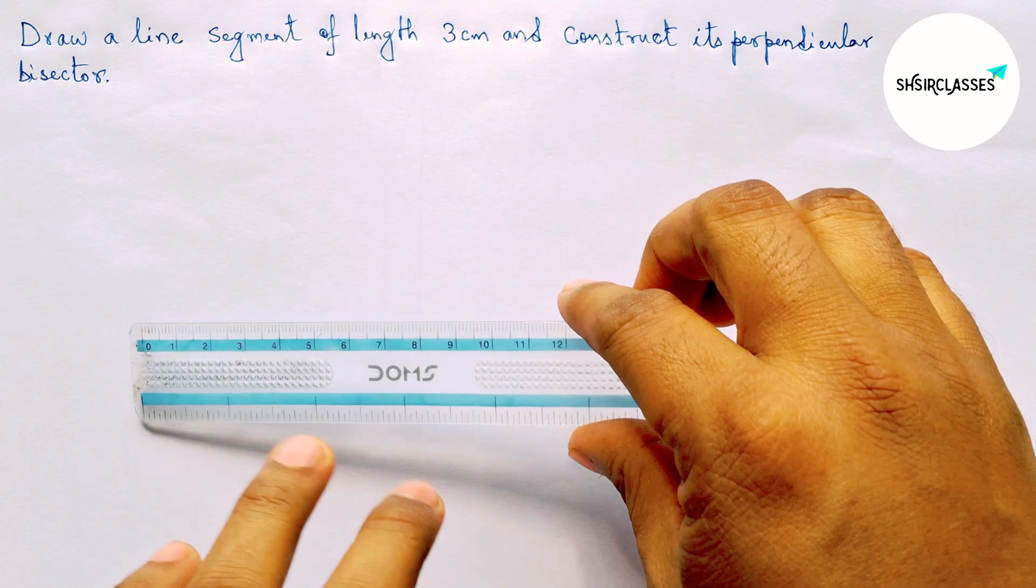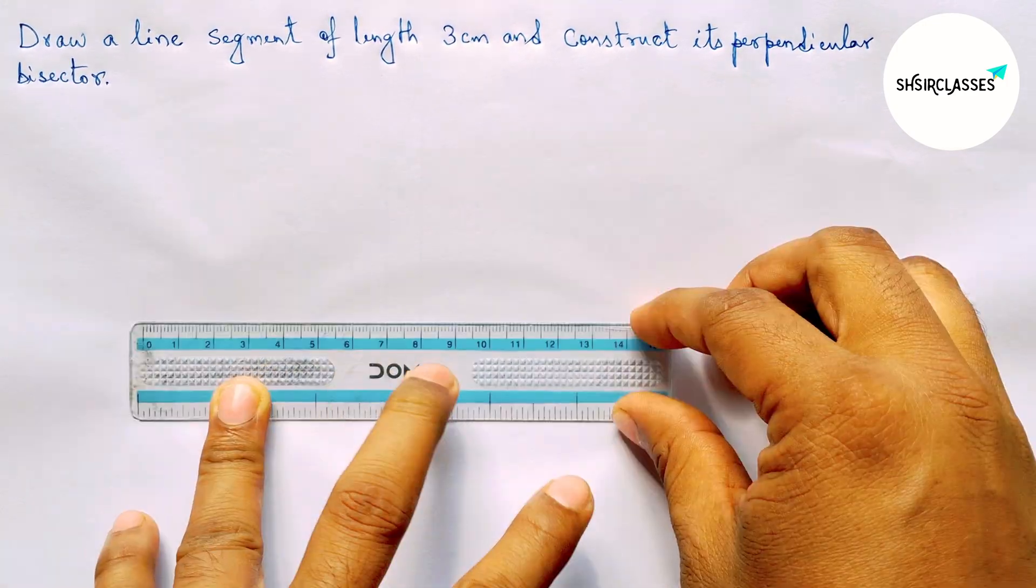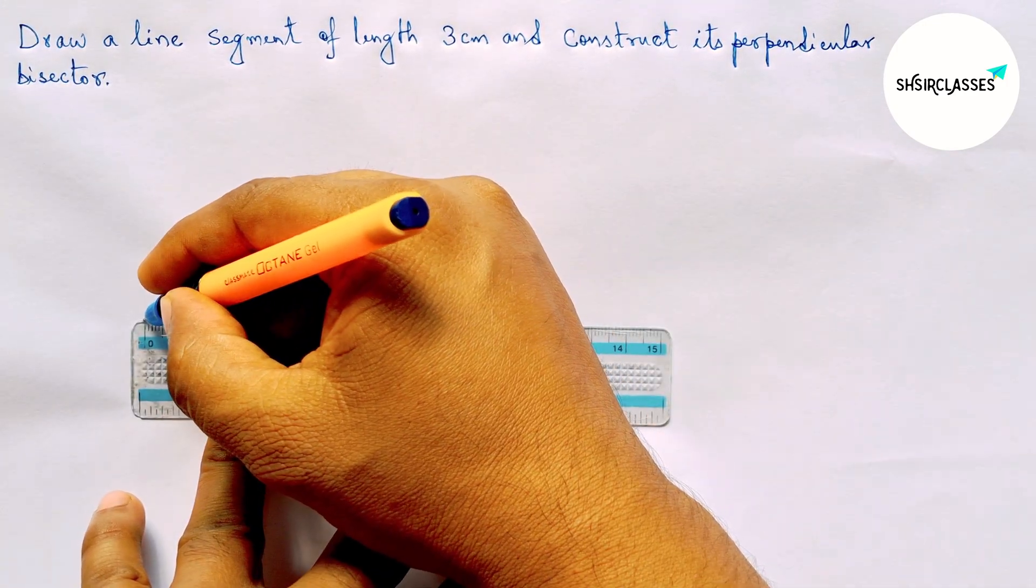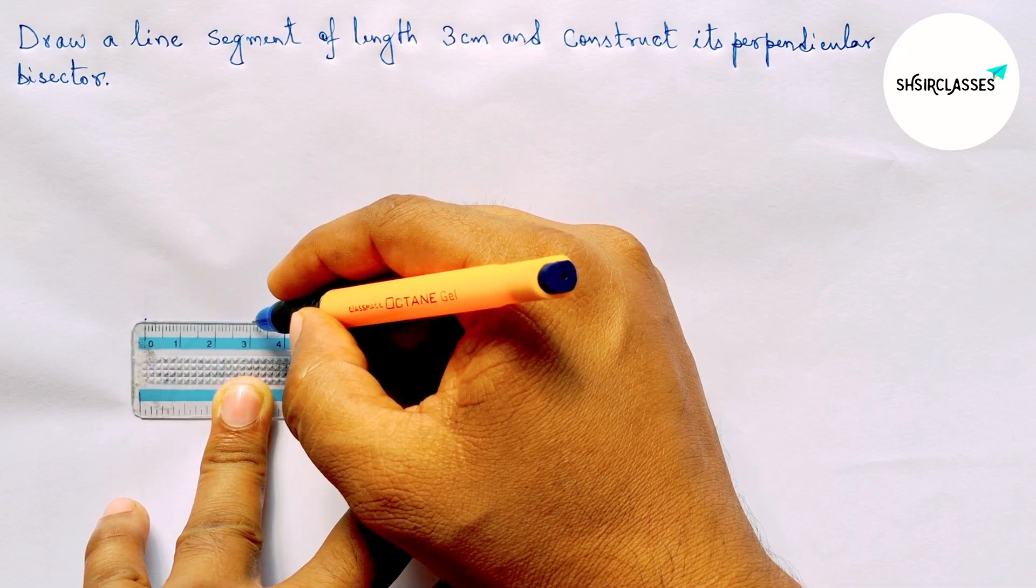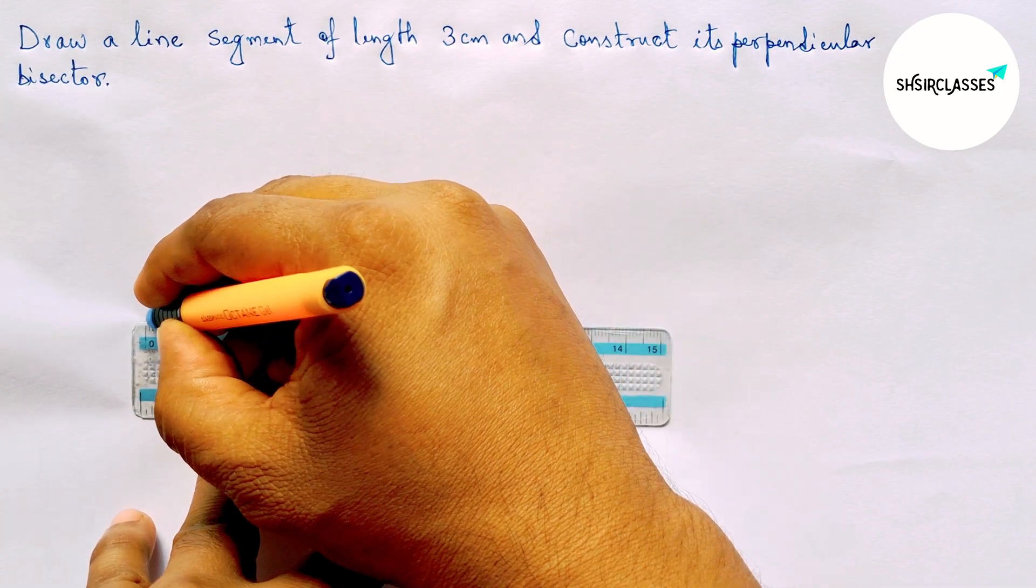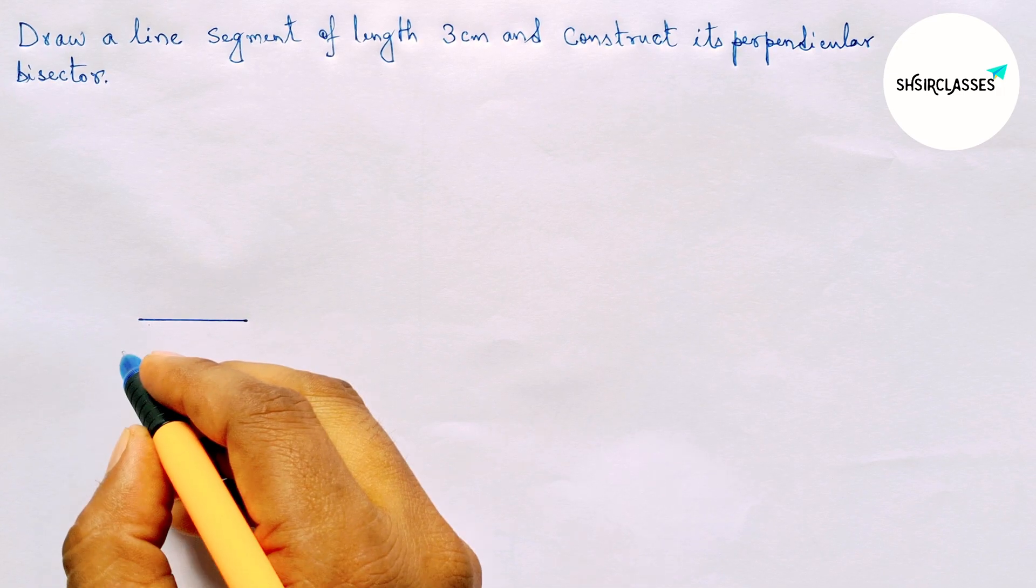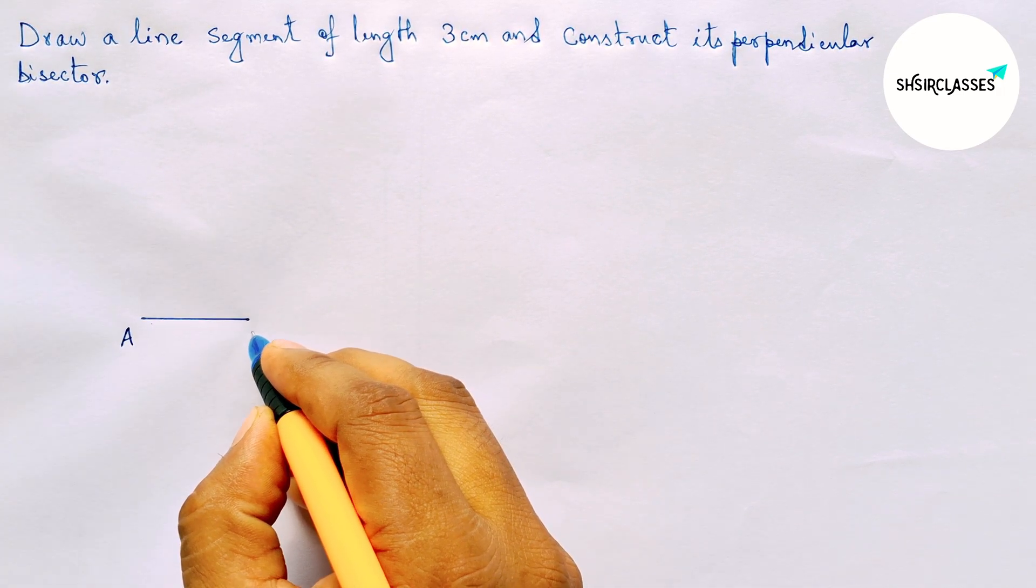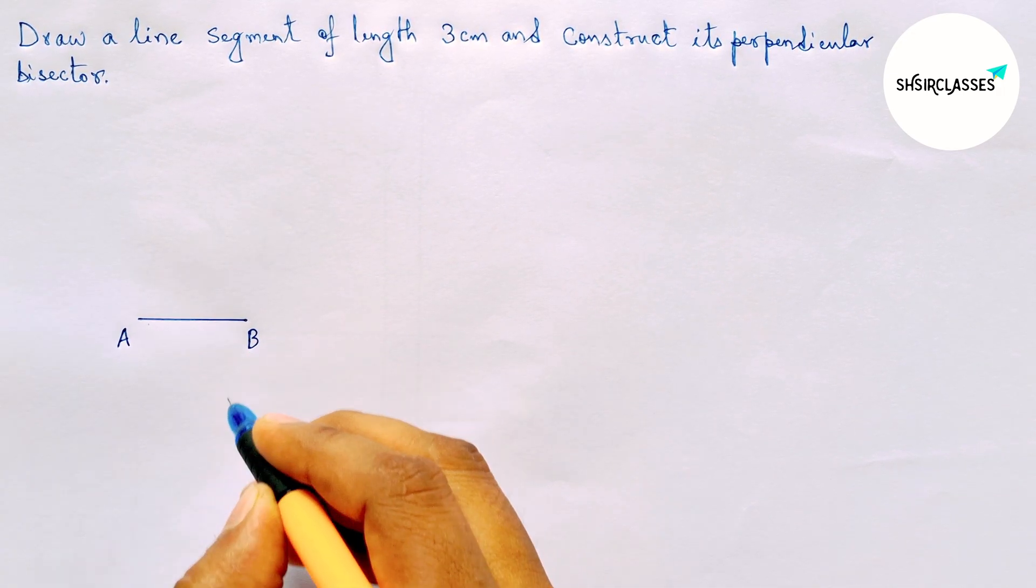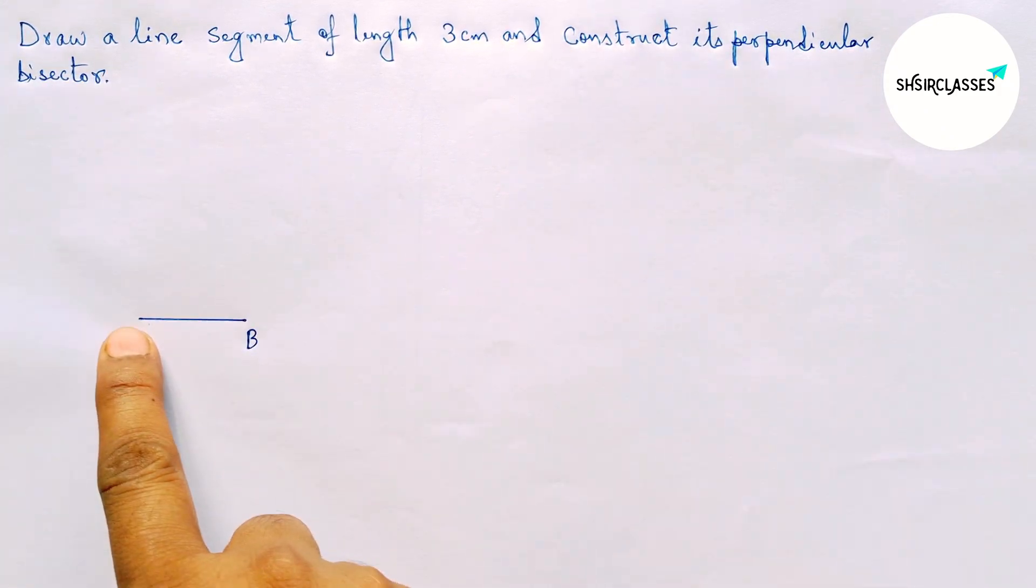So let's start the video. First of all, let us draw here a line segment of length 6 centimeter. So this is a 6 centimeter line segment. Next, labeling here point A and B. Okay, now construct its perpendicular bisector.